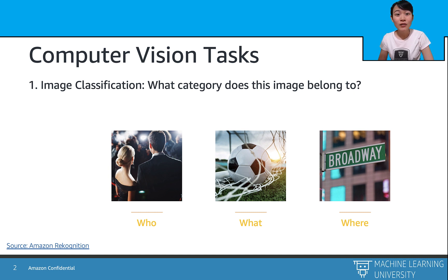Image classification is widely used in lots of Amazon products, such as image search at Amazon.com, surveillance cameras embedded with Amazon Rekognition, and so on.